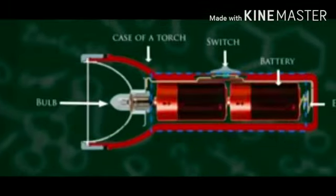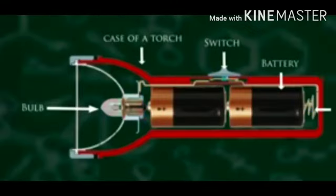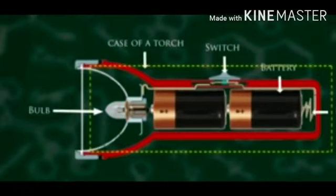The electric energy is necessary for the bulb connected in the circuit to glow. Every torch has a small bulb connected in the circuit which glows to give light. The circuit of an electric torch is controlled by a switch.